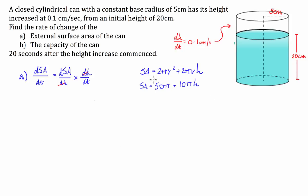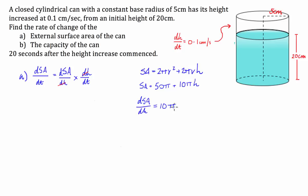Now that we have surface area with respect to height, we can take the derivative: DSA/DH. The constant 50π will cancel and we're left with just 10π.